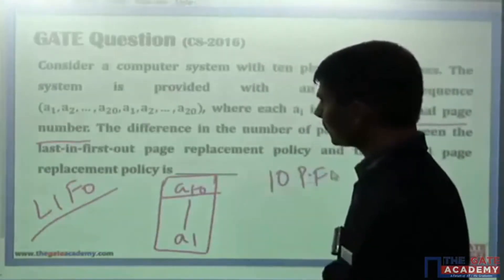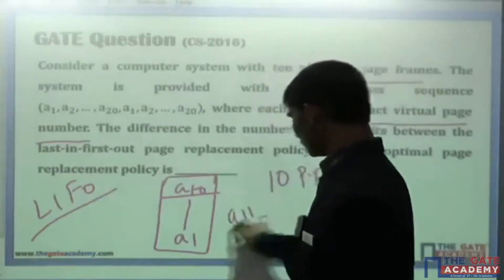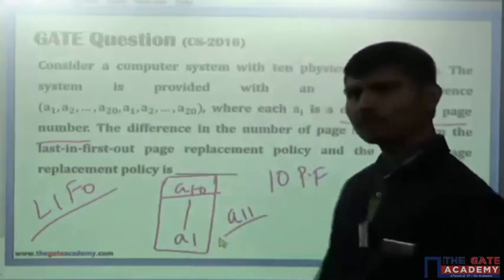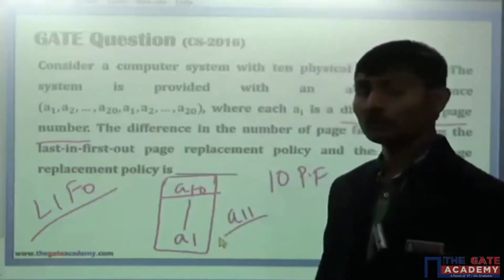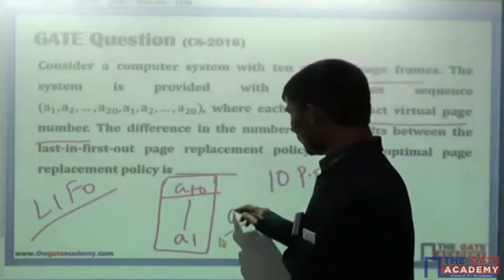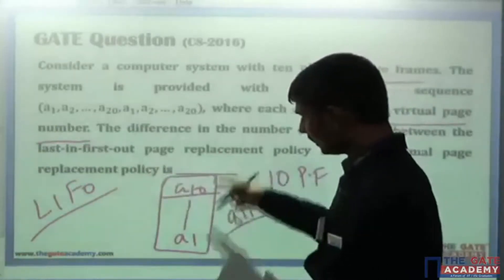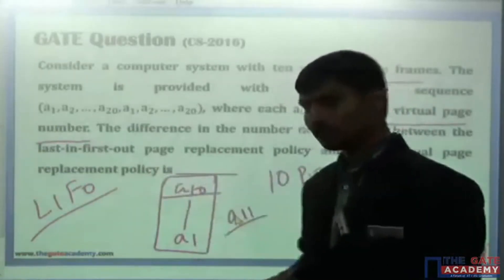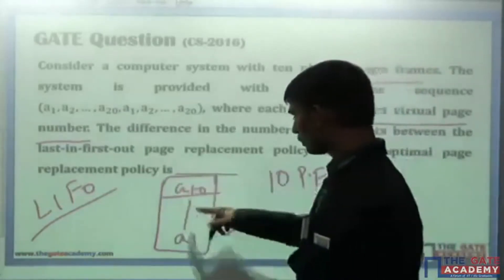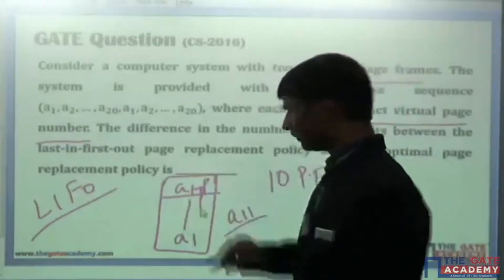After that, A11 is coming and there is no space available, so you have to remove some existing pages. A11 comes and the policy is last in first out. In A1 to A10, the page number which is last in is A10. So you will remove A10 and replace it with A11.